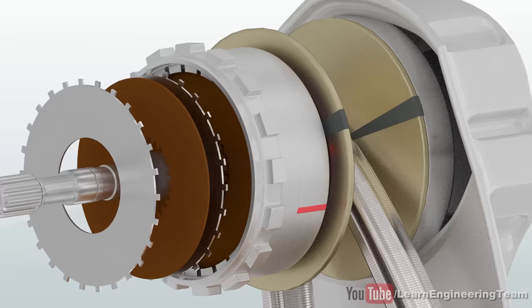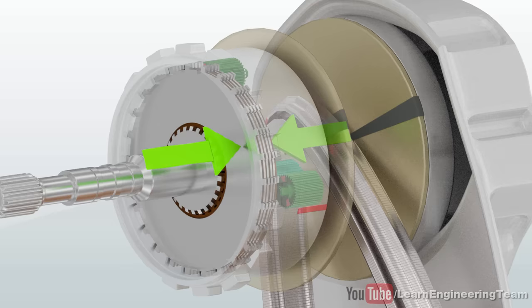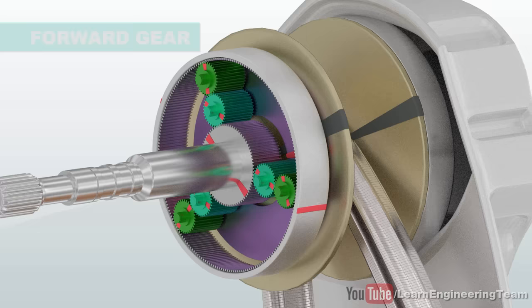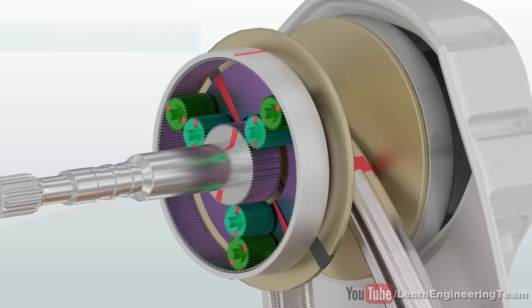A clutch pack is used for this purpose. If the clutch pack is well pressed, the frictional force between the plates will lock the sun gear to the ring gear. This is how the forward gear is achieved. The whole mechanism moves as a single unit here.